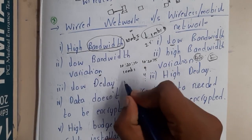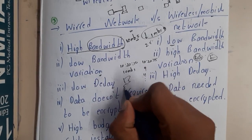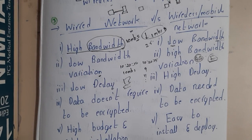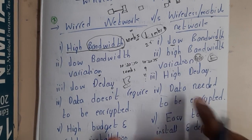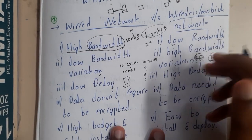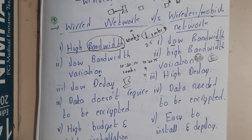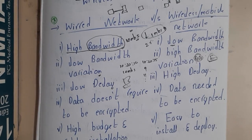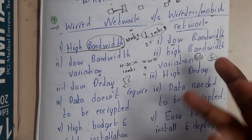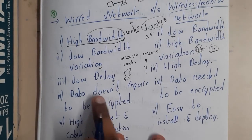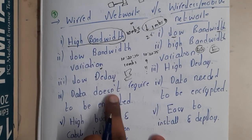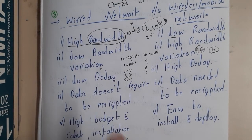Similarly, in wired the delay is low because it is really fast — if you open Google.com it loads quickly. Whereas in a wireless connection, since the speed is lower, there will be some delay. You can simply think of bandwidth as speed.